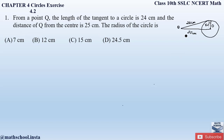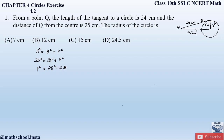Pythagoras theorem states: hypotenuse squared equals base squared plus perpendicular squared. The side opposite the right angle is the hypotenuse. Taking the hypotenuse as 25: 25 squared equals 24 squared plus P squared, so P squared equals 25 squared minus 24 squared. That gives us 625 minus 576, so perpendicular squared equals 49.